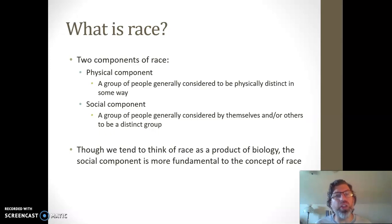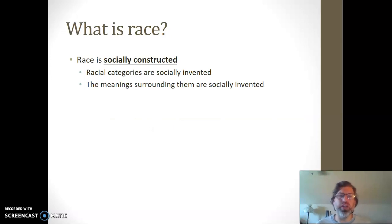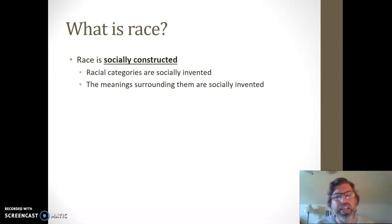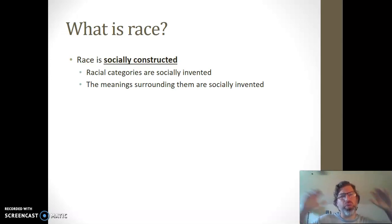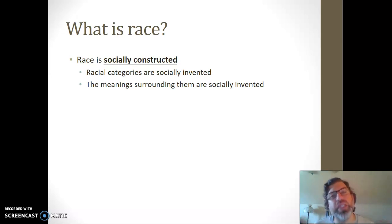In fact, the social component is much more fundamental to the concept of race. Race is socially constructed. What sociologists mean when we say that race is socially constructed is that the categories we use are socially invented — the boundaries around what marks off someone as in one racial group or another, what marks someone off as white or black, is really a product of our social environment. Those categories don't exist in nature; they are invented within society itself.